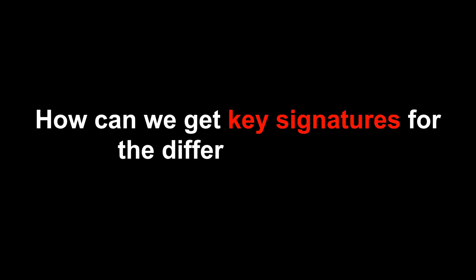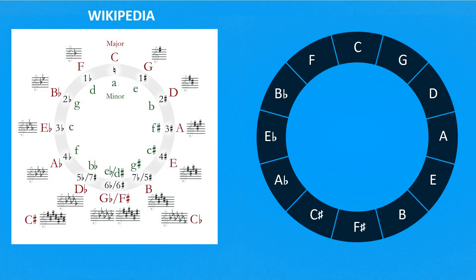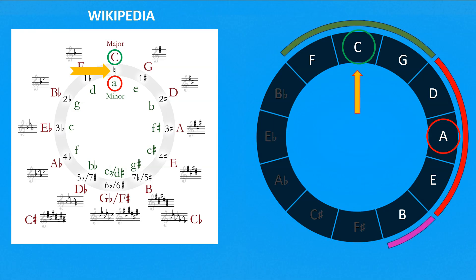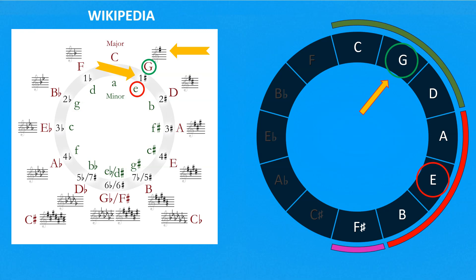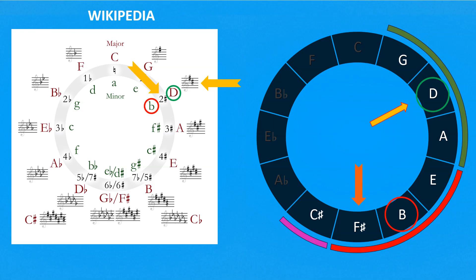How can we get the key signature for different scales? Starting from the C major scale and relative A minor scale: looking at the Wikipedia version, there are no sharp or flat notes, and there are none in our portion of the circle either. Moving on, we have the G major scale and its relative E minor scale — in this case we have one sharp, F sharp. Then the D major scale has two sharps: F and C. We can get all this information directly from our circle, and so forth.